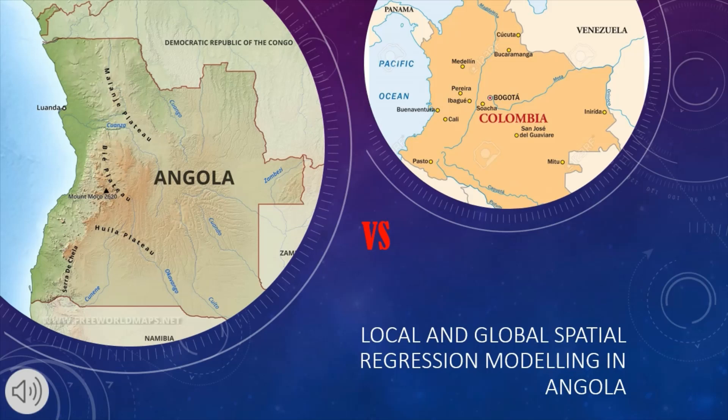In the Colombian study, their variables, similarly to the variables in the Angolan study, have different levels of importance, where within the GWR Geographically Weighted Regression model, temperature was the most important, and within the OLS model, annual precipitation was the most important environmental variable, followed by temperature. In comparison to the Angolan study, the Ordinary Least Squares model showed that mean annual temperature was the most important, followed by annual precipitation. Both studies recorded topographic variation to be the lowest level of importance.